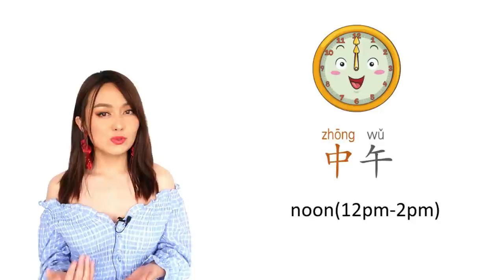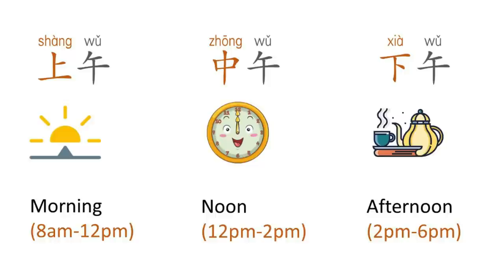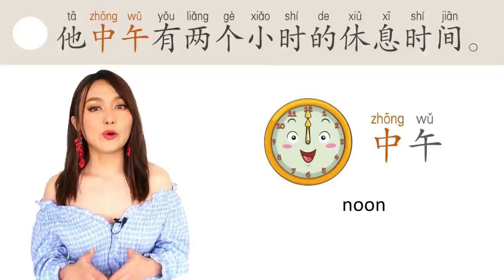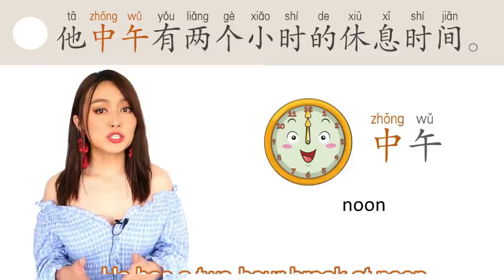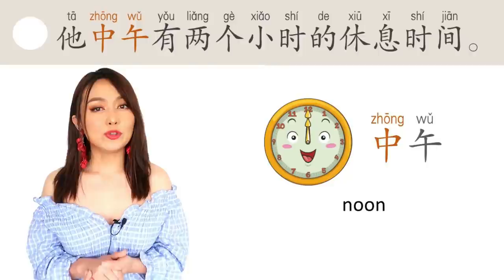好，下一个：中午。 It means noon — the middle of the day. It refers to the time from 12pm to 2pm. Here are some related vocabulary: 上午 is morning, from 8am to 12 o'clock; then 中午 from 12pm to 2pm; and later 下午, afternoon, from 2pm to 6pm. Example: 他中午有两个小时的休息时间。 He has a two-hour break at noon.